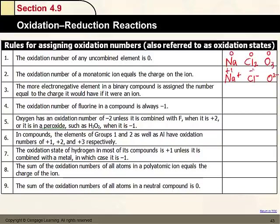For ions, the oxidation numbers are +1 for Na⁺, -1 for Cl⁻, and -2 for O²⁻. Note: for the charge, we write the number then the sign; for the oxidation state, we write the sign then the number. For compounds like water or sodium chloride, we assign oxidation numbers to the more electronegative element first — the element in the top-right corner of the periodic table. Oxygen in a compound has an oxidation state of -2, and hydrogen would be -1 in that context.